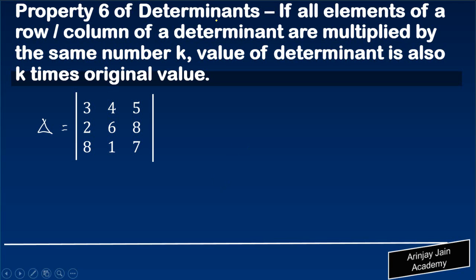Let us look at one more property of determinants. Right now we are talking about Property 6, which says that if all elements of a row or column of a determinant are multiplied by the same number k...